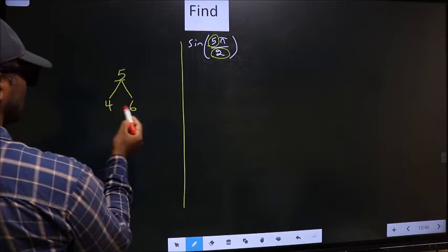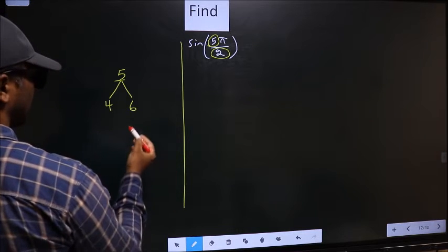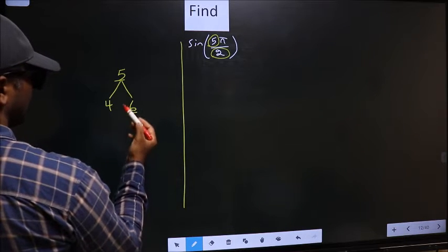So 5 is close to which number? It is close to both numbers. You select any one number. Let us say I take 6.